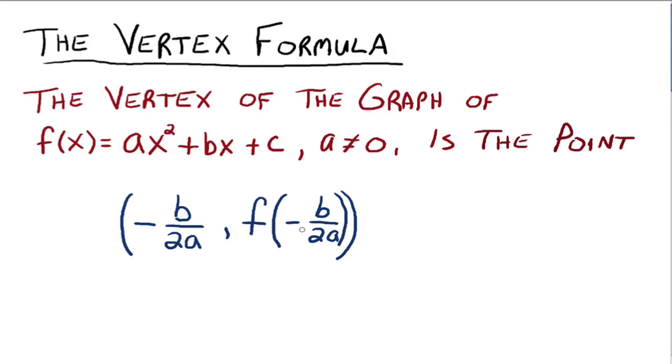So really, what you need to remember is negative b over 2a will give us the x part of the vertex, the h if you will, from our hk situation. Then once we know that value, plug it into your function up here and let it tell you what the y part is supposed to be. That's it.